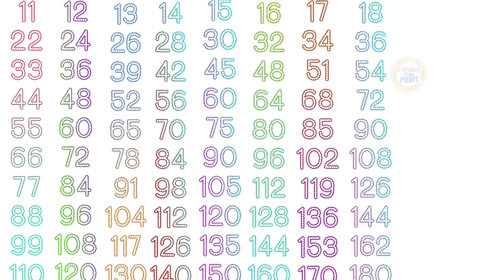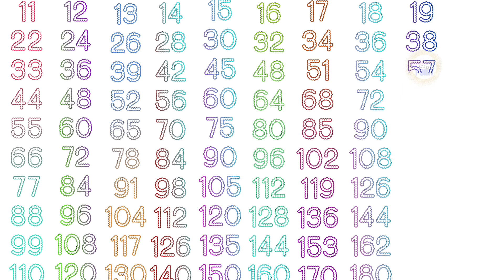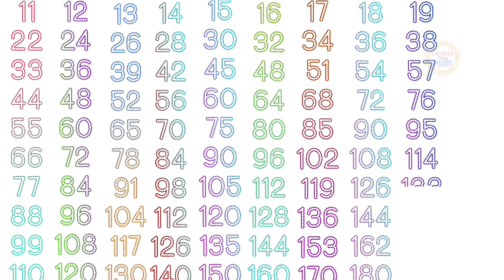Table of 19: 19×1=19, 19×2=38, 19×3=57, 19×4=76, 19×5=95, 19×6=114, 19×7=133, 19×8=152, 19×9=171, 19×10=190.